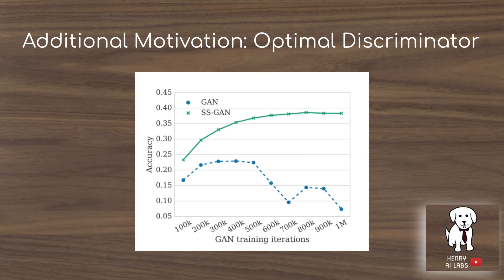Additional motivation: at convergence where the generated data distribution is identical to the original, the optimal discriminator just outputs 0.5 regardless of input, because overly confident predictions will hurt it. When this happens and you take representations from the discriminator to use as features for a classification model, they become very bad — because the discriminator no longer has a sense of visual representation, just outputting 0.5 regardless of the input.